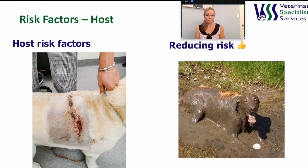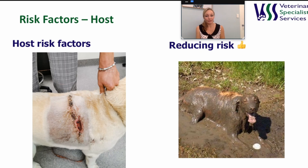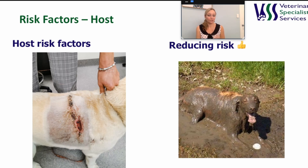Then we have host risk factors — things such as patient age, with increasing age increasing the risk. The presence of a distant site of infection increases the risk. Obesity has been found to be a risk factor, and systemic diseases such as diabetes, malnutrition, and low albumin may also increase the risk. The patient's ASA grade — an assessment of anaesthetic risk — is related to increased infection risk with a higher grade. Some medications such as steroids can increase the risk as well, although evidence around this is limited.